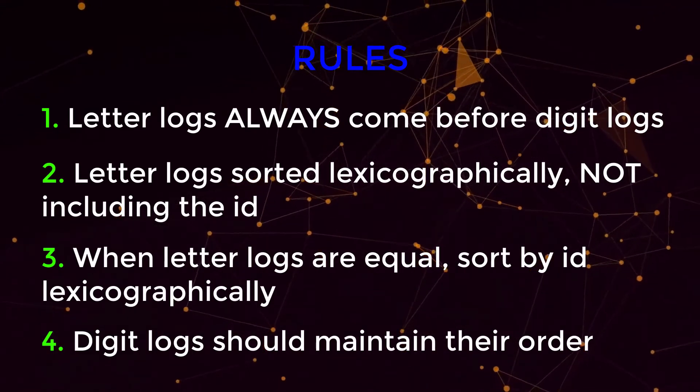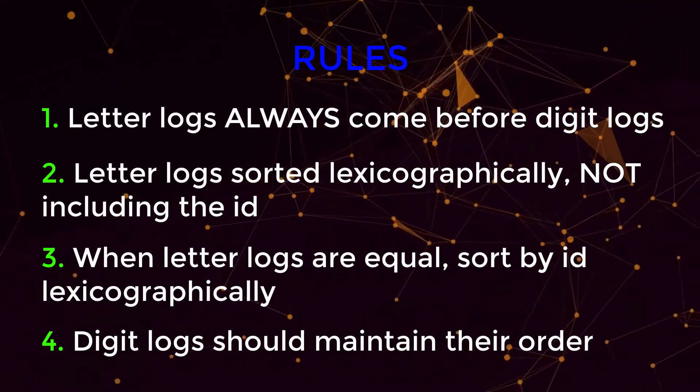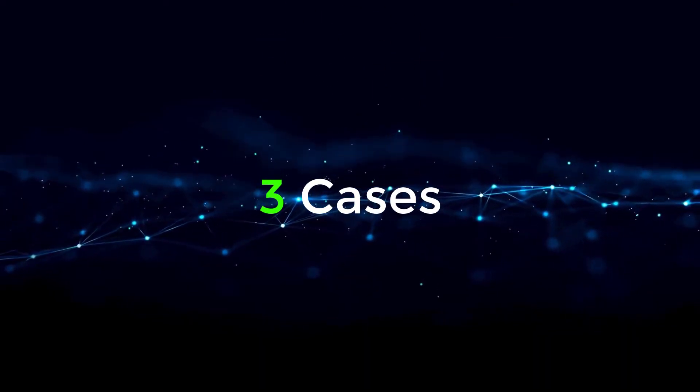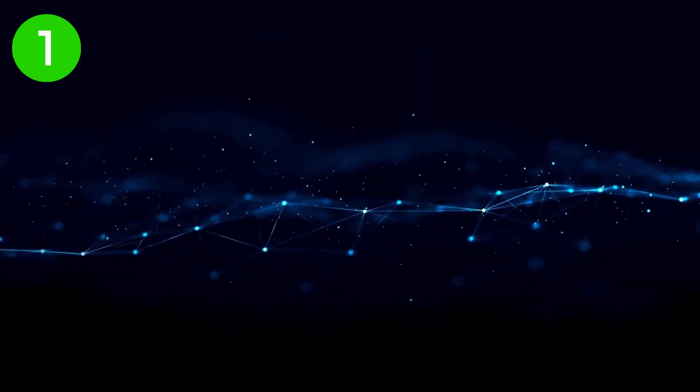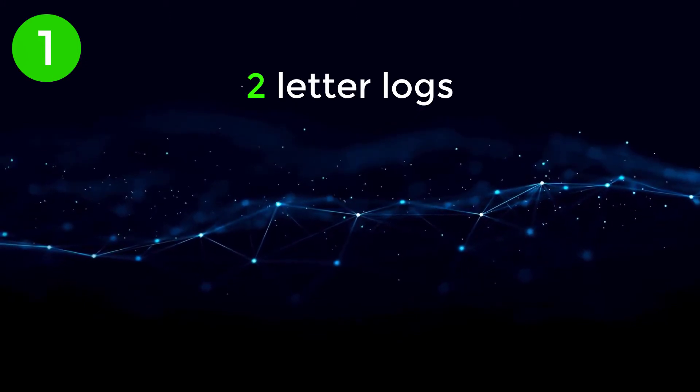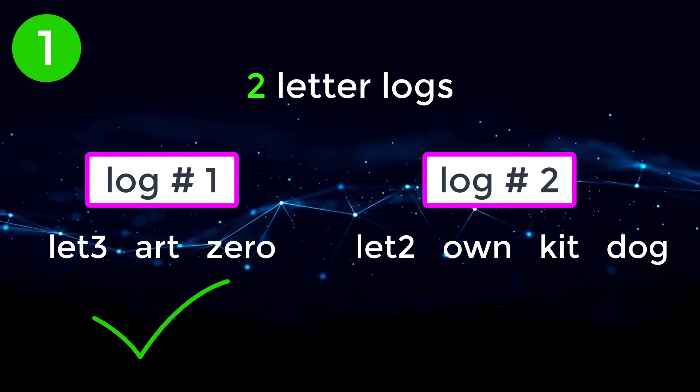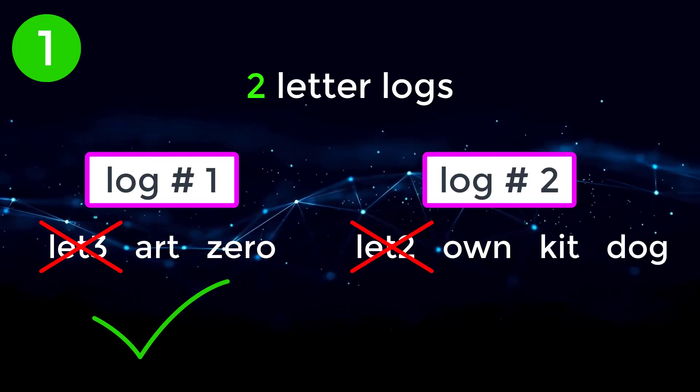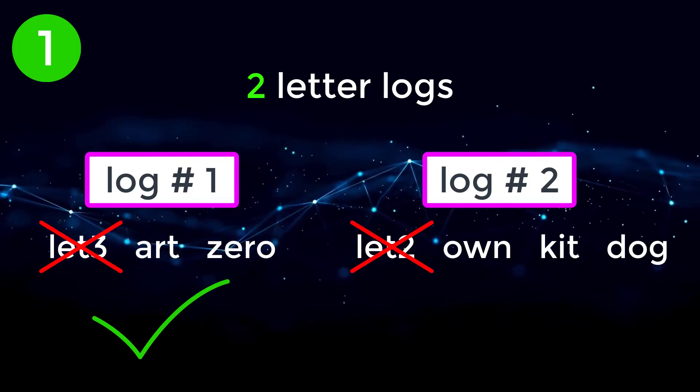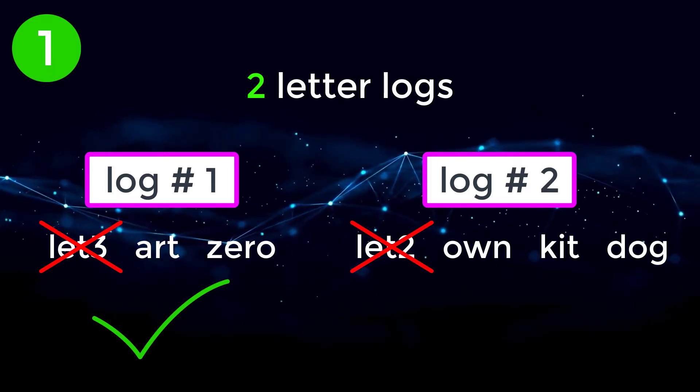Now that we understand the rules for sorting, let's go through an example. So we can have three different cases when we're sorting. The first case is we have two letter logs. So let's say we have log one and log two. In this example, log one would come before log two, ignoring the identifiers because art zero is lexicographically less than own kit dog.